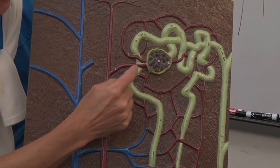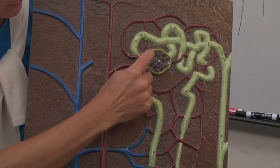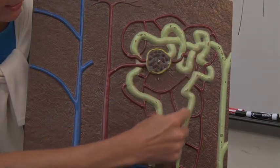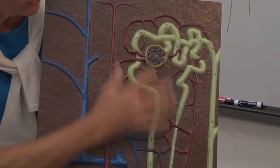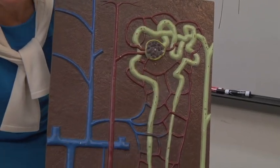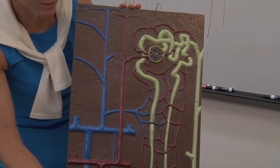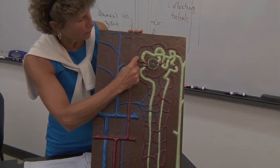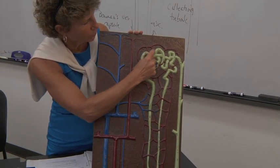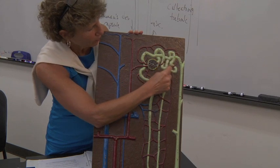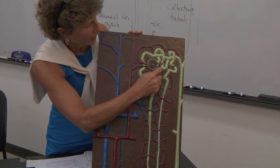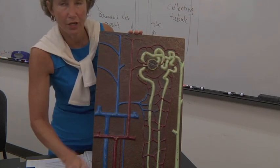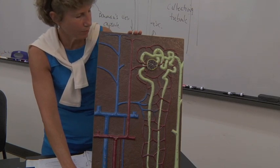We'll come back to that in a minute. As filtrate gets in these tubes, you're just going to start pulling back the good stuff and putting it into the blood system, so you have to have a blood supply to get the good stuff back in. So what happens is this efferent arteriole is going to break up into a mass of another capillary bed, and these capillaries that surround all these tubes are known as the peritubular capillaries.